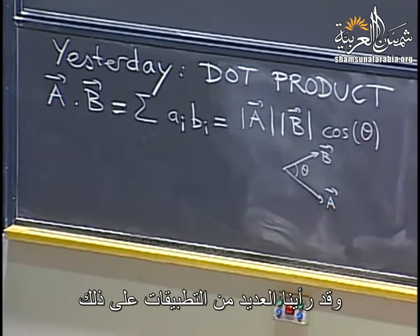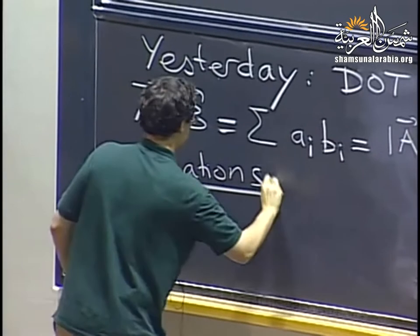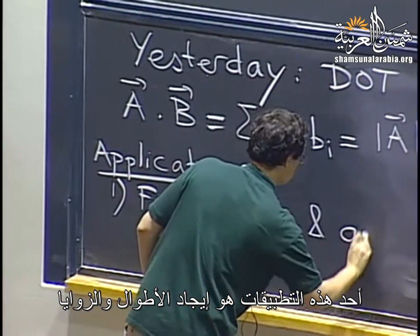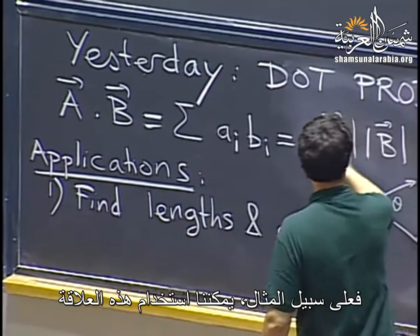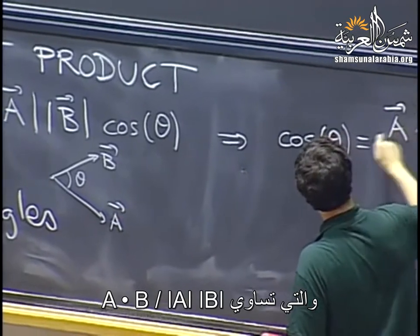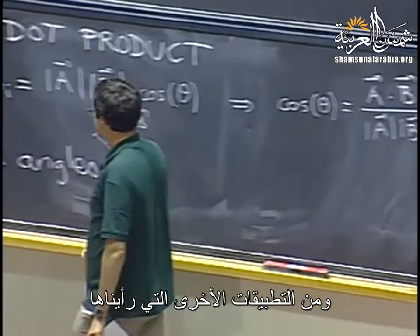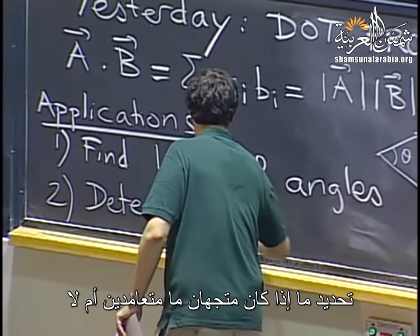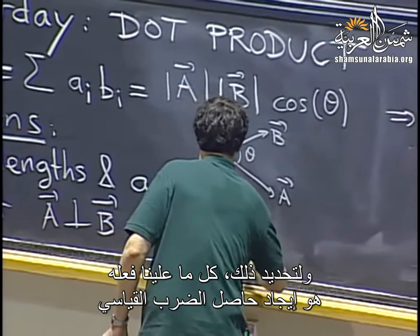We have seen several applications of dot product. One application is to find lengths and angles. You can use this relation to give you the cosine of the angle between two vectors as the dot product divided by the product of the lengths. Another application is to detect whether two vectors are perpendicular: to decide if two vectors are perpendicular, all we have to do is compute their dot product and see if we get zero.